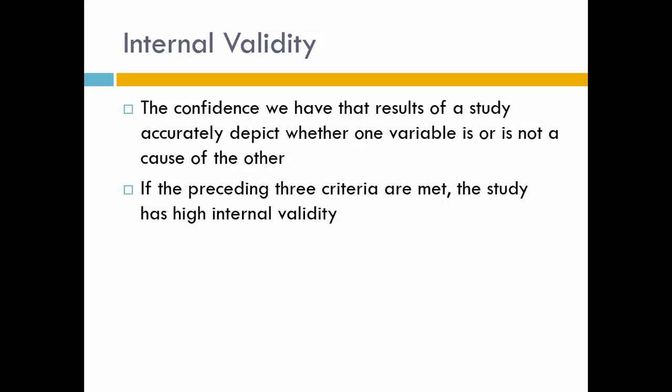Internal validity is the confidence we have that results of a study accurately depict whether one variable is or is not a cause of the other. If I do my study and find that variable A predicts variable B, how much confidence do I have that that's actually what's going on? Those three criteria we just discussed all have to be met in order to say we have confidence that variable A predicts variable B. If they are met, we can say our study has high internal validity.